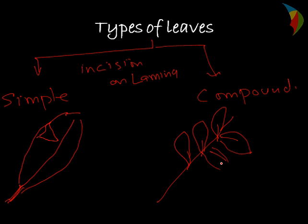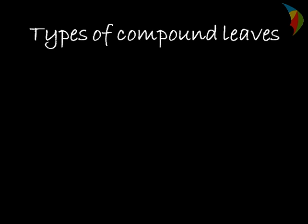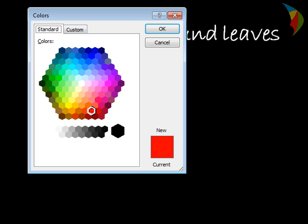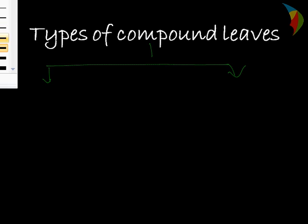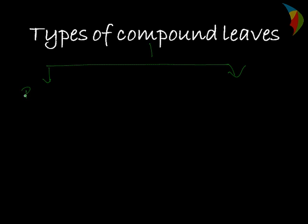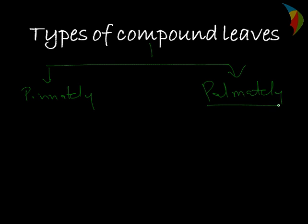This forms a compound leaf. So broadly dividing, there are two types of leaves. We can divide compound leaves into many types depending on the type of the leaf and the shapes of the different lamina. We can broadly divide compound leaves into two types: one is pinnately compound leaves and another is palmately compound leaves.